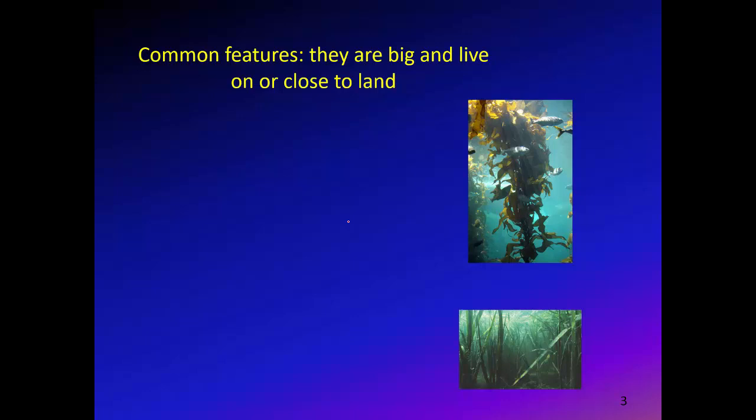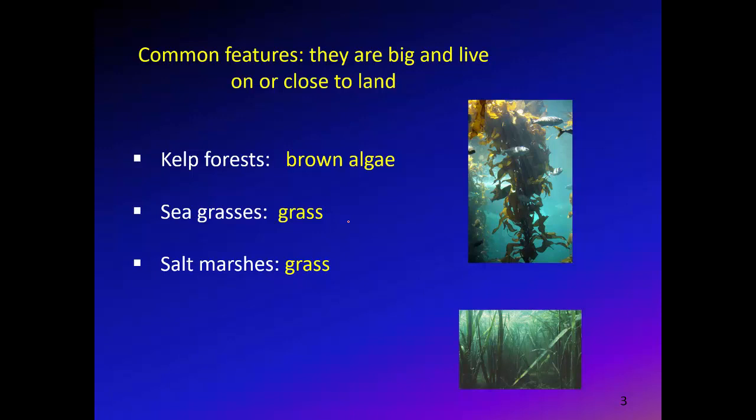These plants can't occur in the middle of the ocean at 2,000 meters depth because no light reaches that far down. We'll see later that these organisms actually share some other very interesting characteristics beyond just being big and near land. We're going to discuss kelp, which are brown algae; seagrasses; grasses found in salt marshes; and finally mangroves.